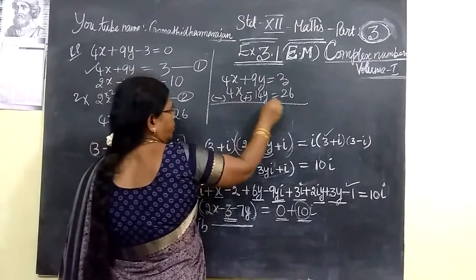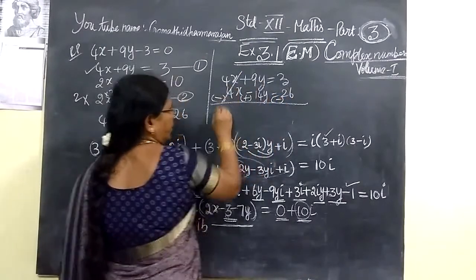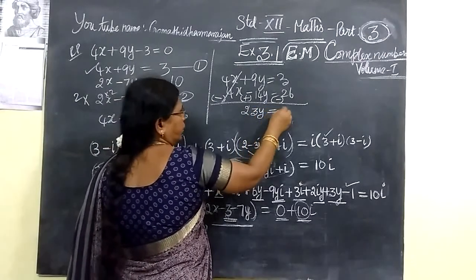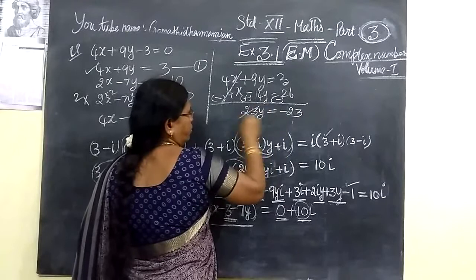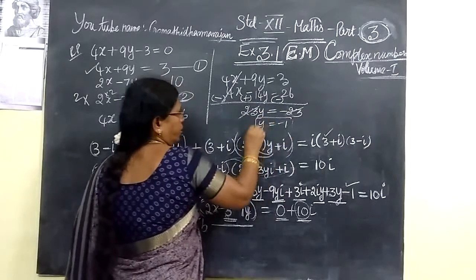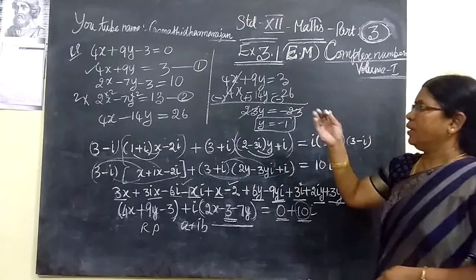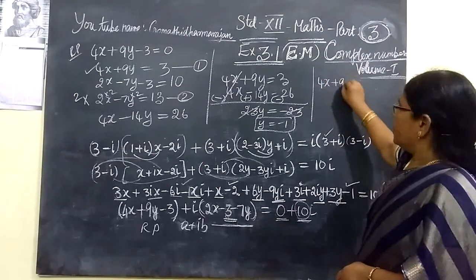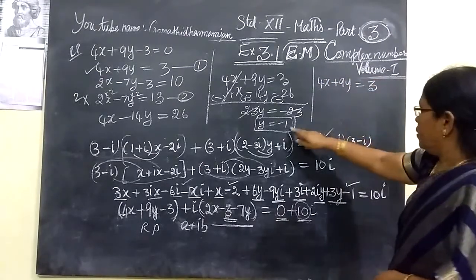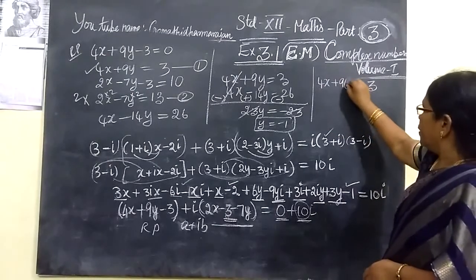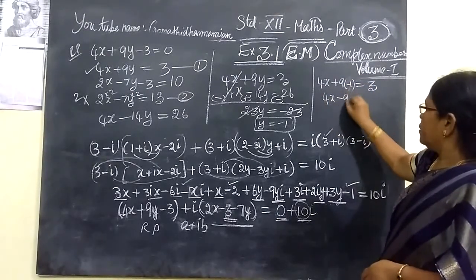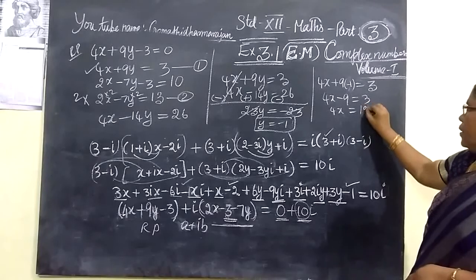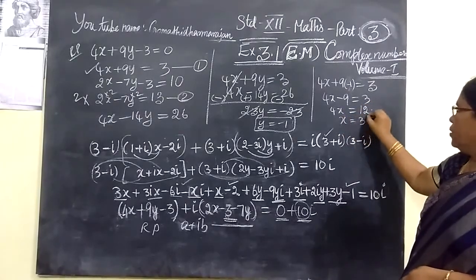Now subtract: the signs change to minus, giving 23y equals minus 23, so y equals minus 1. Substituting y equals minus 1 into equation 1: 4x plus 9 times (minus 1) equals 3, so 4x minus 9 equals 3, giving 4x equals 12, therefore x equals 3.